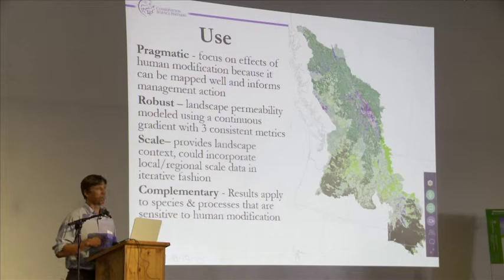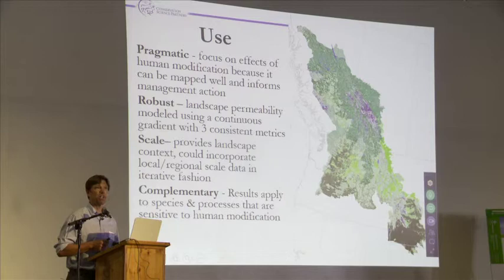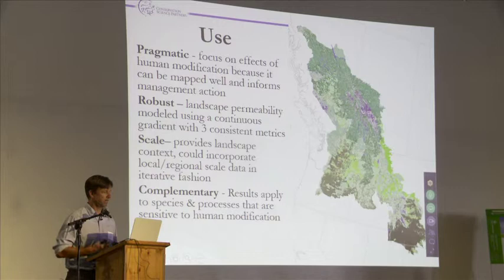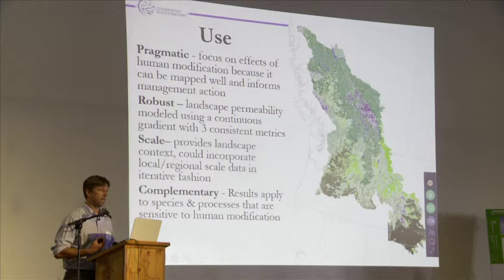First of all, I think of this kind of approach as really pragmatic. It focuses on the effects of human modification because we can map that pretty well, and it informs management action — we can do a fair amount about modifying human action, we can protect it, we can change actions. There's a lot of other things in the world that we don't have much of a management handle on. So there is a useful connection there. I think of this approach as being fairly robust — landscape permeability.